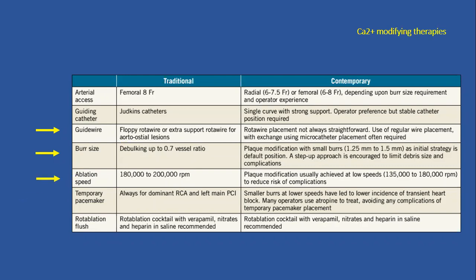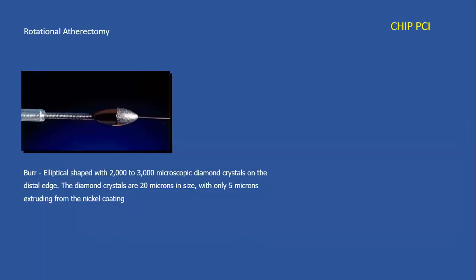Another significant contribution to improving outcomes and reducing risk was changing the speed of the burr. Originally it was 180 to 200,000 RPMs, which was subsequently decreased to 135 to 180,000 RPMs, which we currently use. So with the PREPARE-CALC trial and changes in how we use rotational atherectomy, we have made it significantly safer.